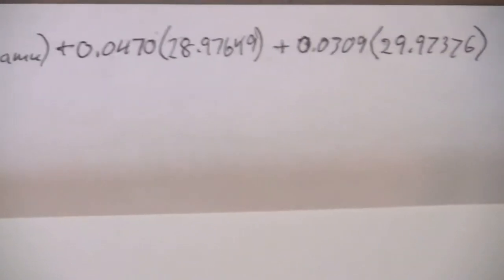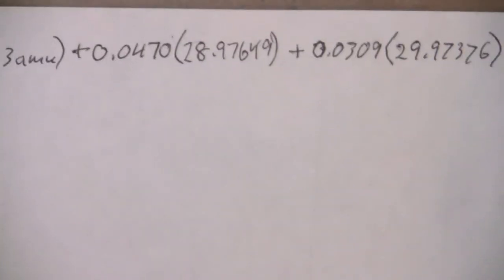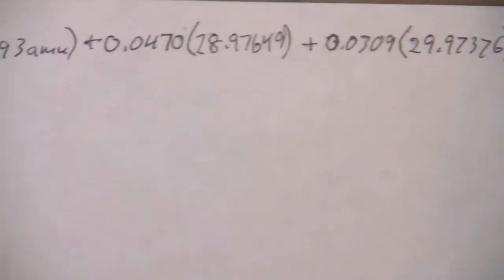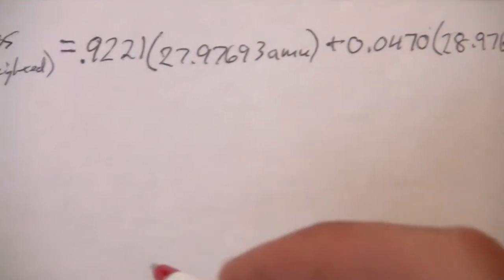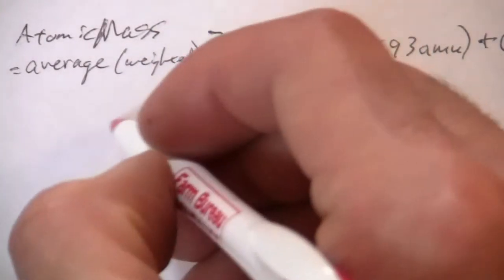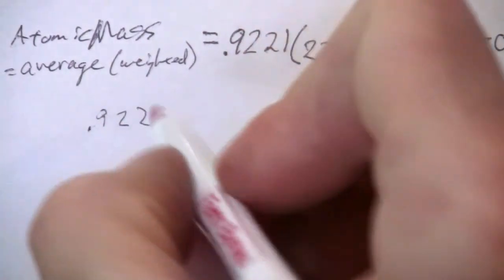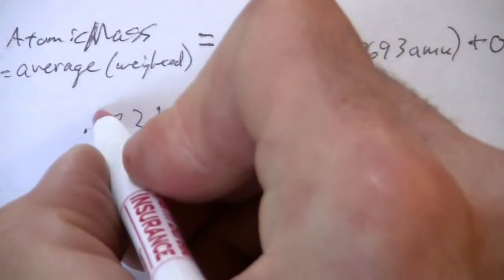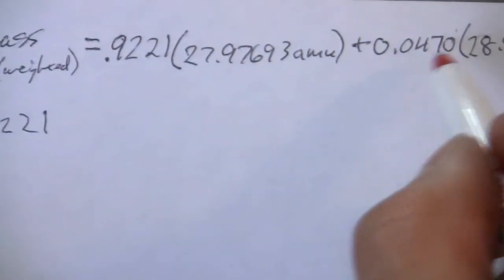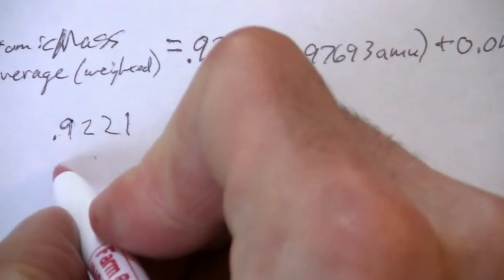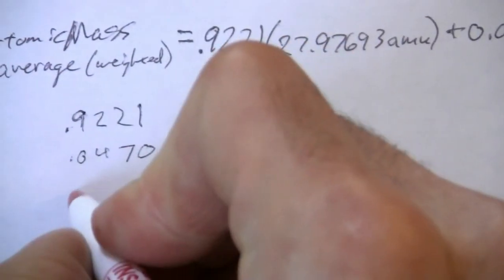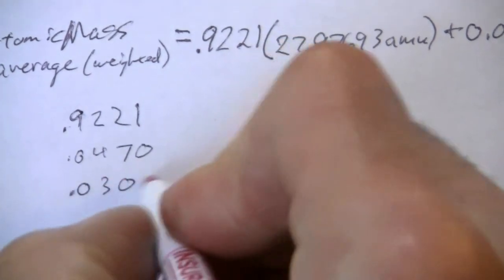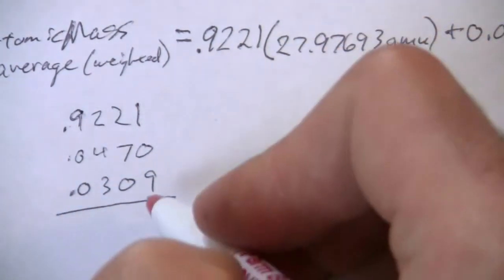So here is our equation, and we're just going to calculate that out. Just to demonstrate this, I'm going to verify that these numbers, these percentages all add up to 100%. 0.0470, and then the other one was 0.0309. If we add these all up,